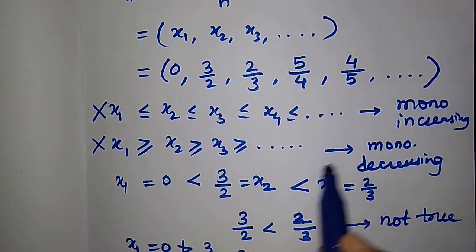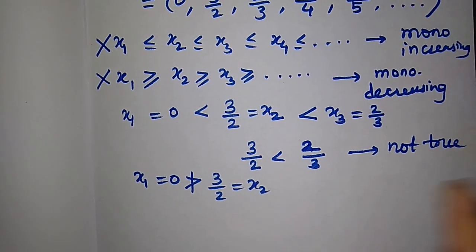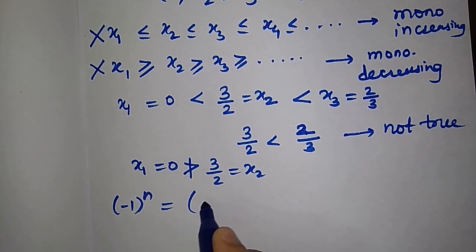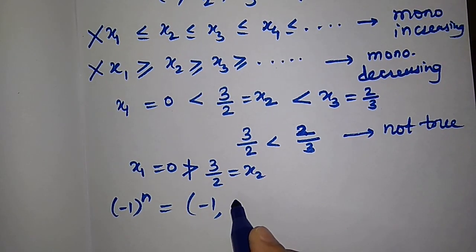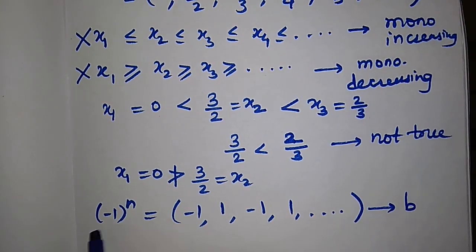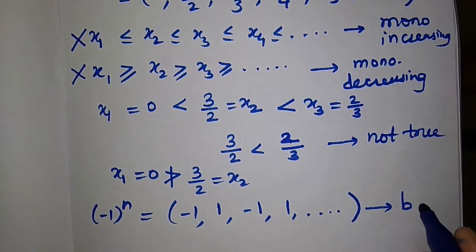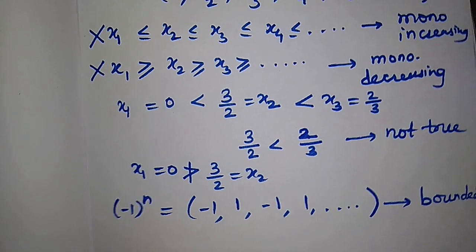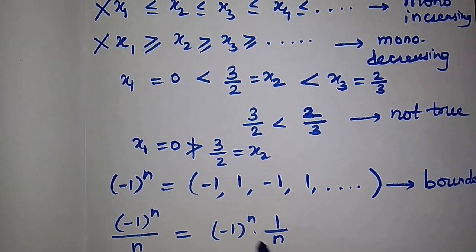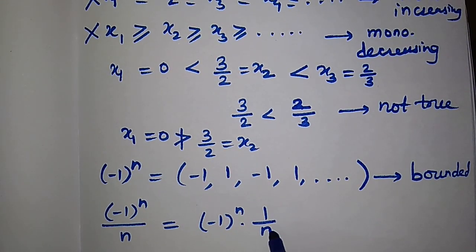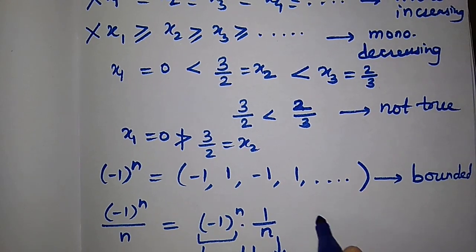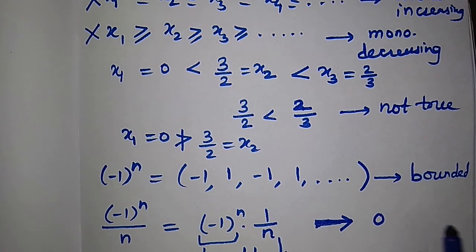Also, x₁ = 0 is not greater than x₂ = 3/2, so it is not monotonically decreasing either. However, we can find the limit. The sequence (-1)ⁿ is an alternating bounded sequence with values ±1. So (-1)ⁿ/n = (-1)ⁿ · (1/n). Since 1/n converges to 0 and (-1)ⁿ is bounded, by the bounded-times-zero theorem this product converges to 0.